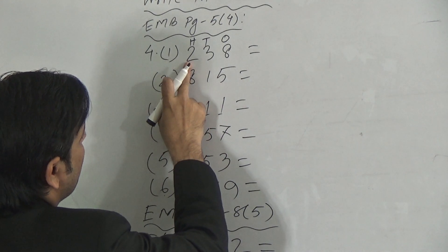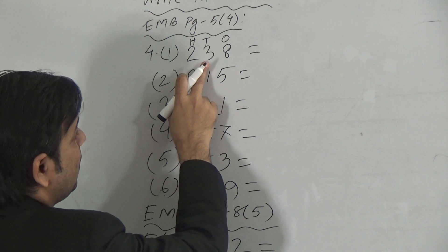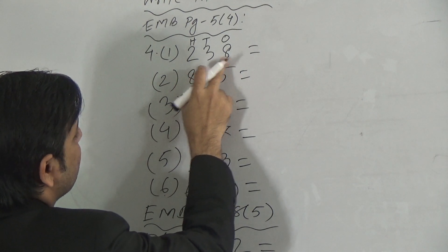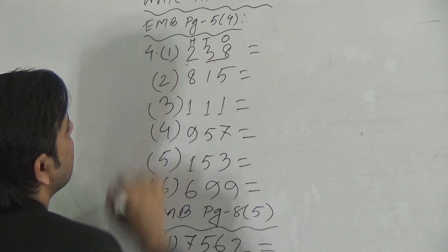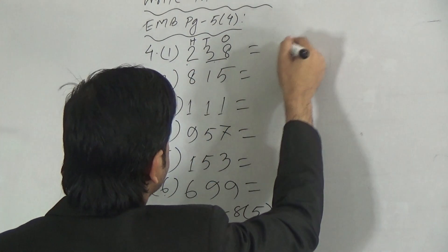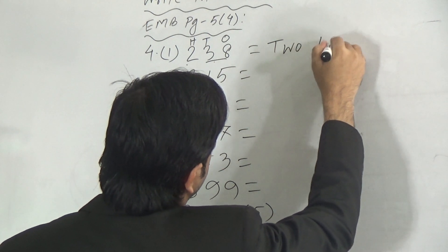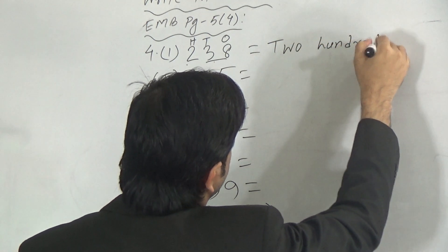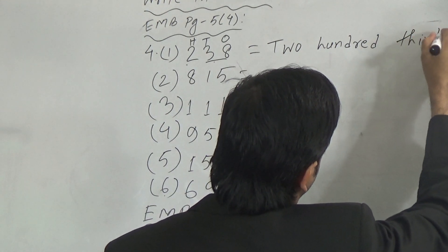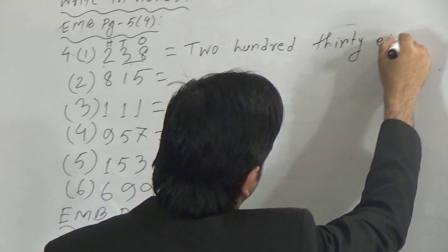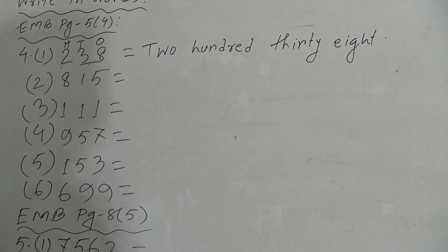So, for the first number: 2 is in the 100's position, 3 is in the 10's position, and 8 is in the 1's position. This makes 238. So we have to write here: 238.